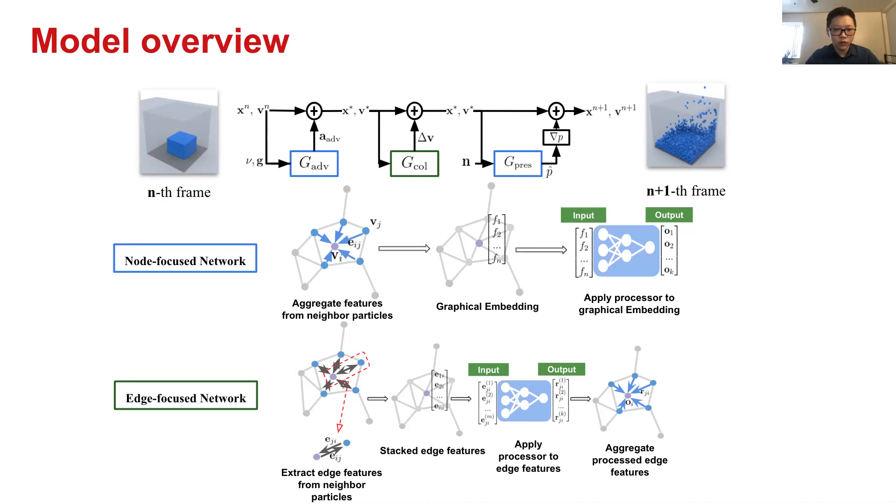Then we use the collision net to adjust the velocity field. It applies a velocity correction to the velocity. And then last, we use a pressure net to calculate the pressure and project it back using the pressure gradient and update the particles to the state of next frame.